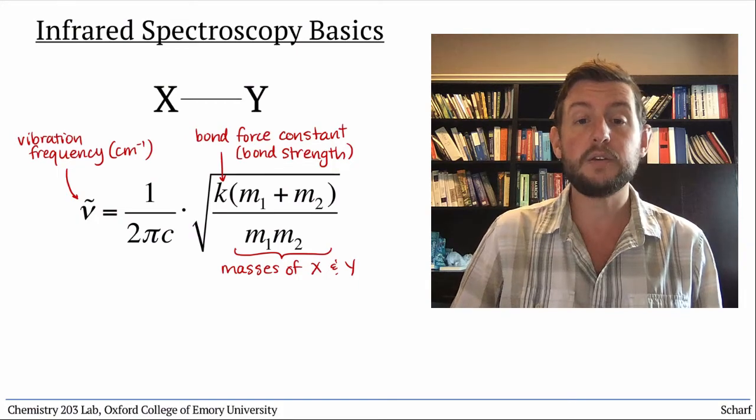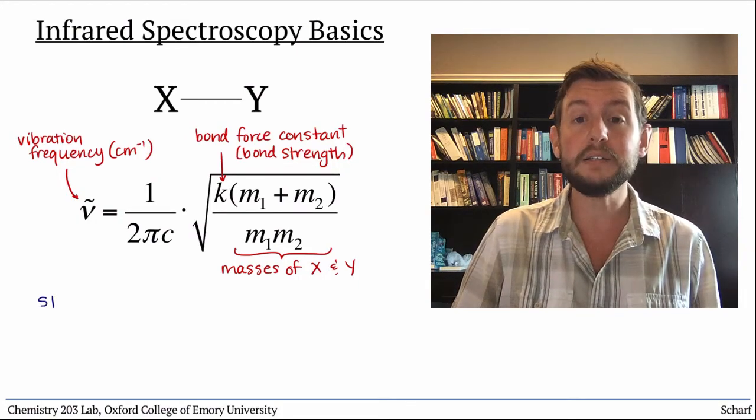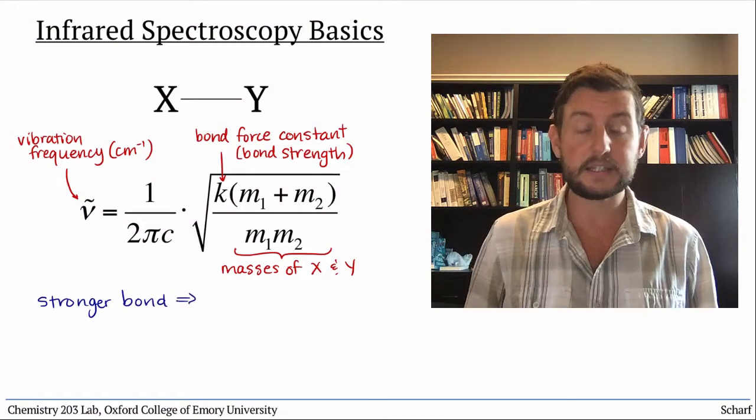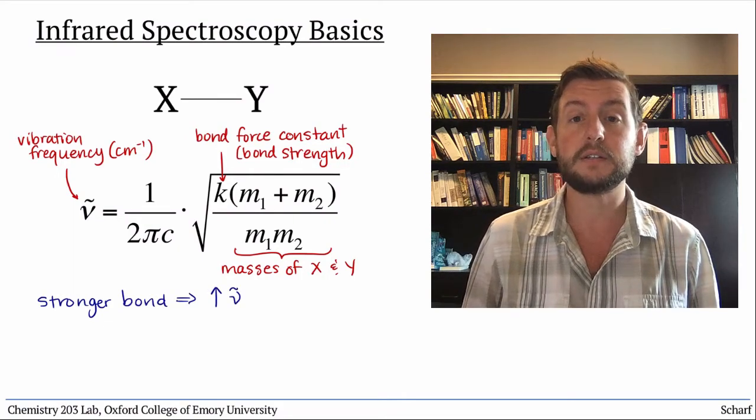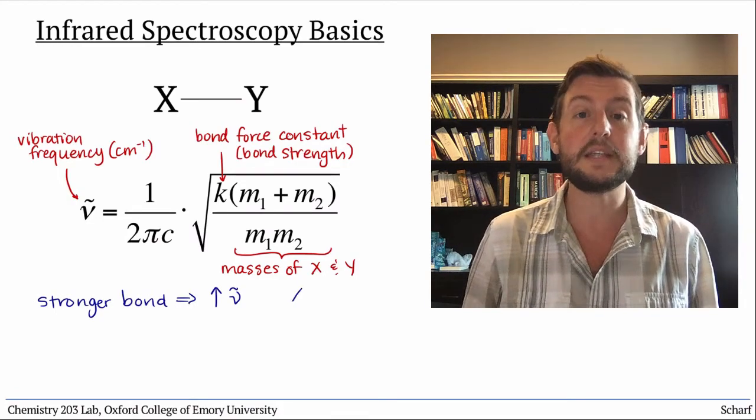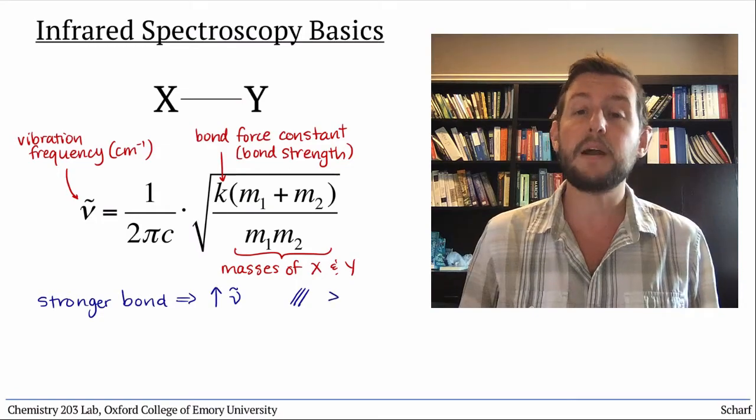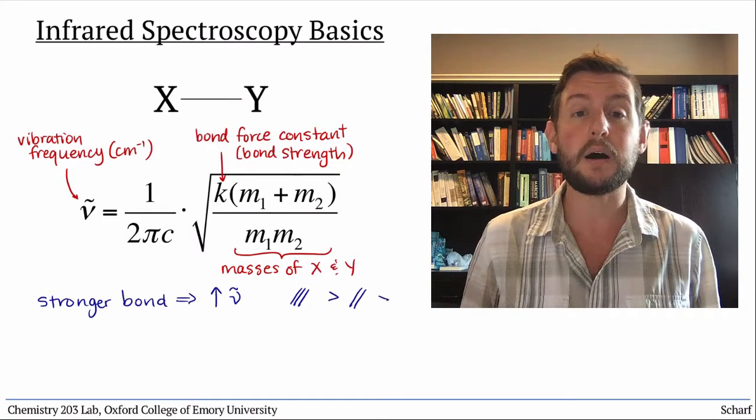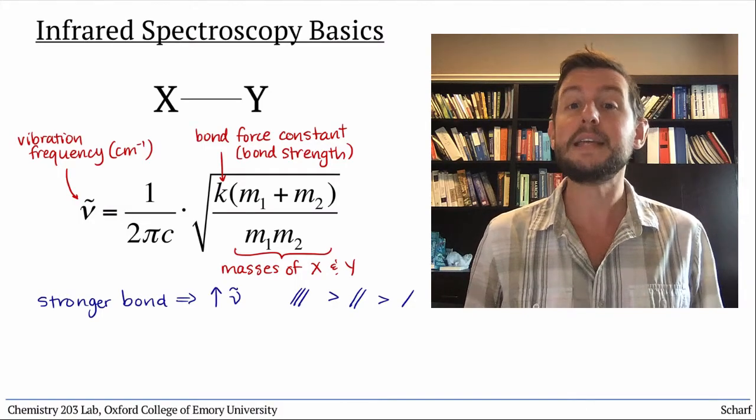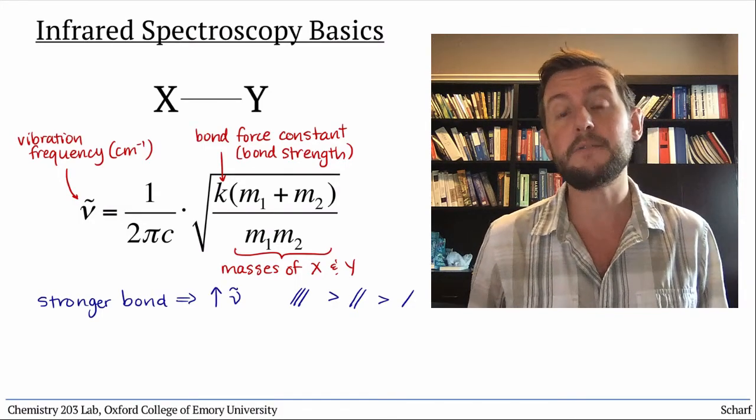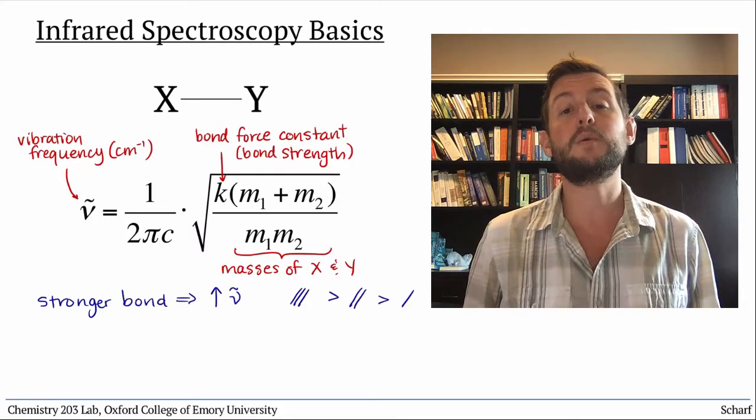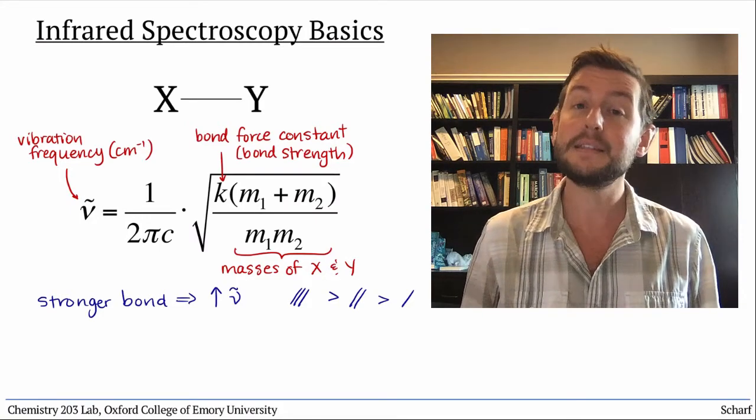From this equation, we can see that stronger bonds, which have larger bond force constants, give rise to higher frequency vibrations. So in general, we expect triple bonds to vibrate with higher frequency than double bonds, which vibrate with higher frequency than single bonds, all other things being equal. So for example, a C≡N triple bond has a higher frequency vibration than a C=N double bond, which has a higher frequency vibration than a C-N single bond.